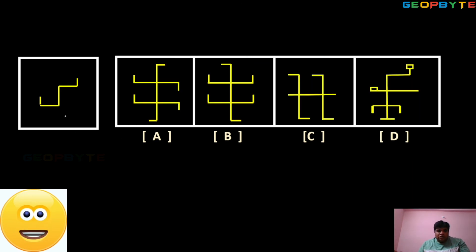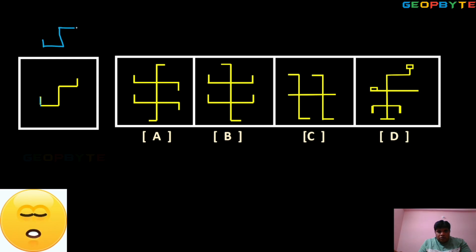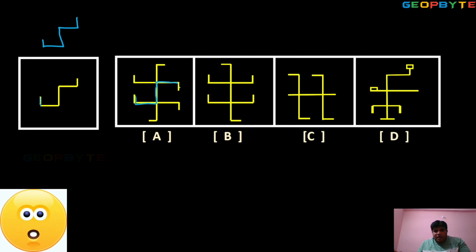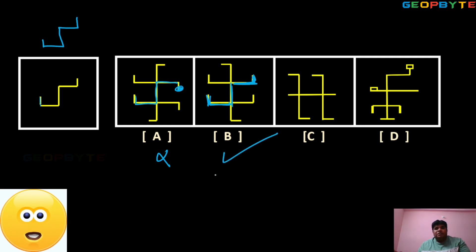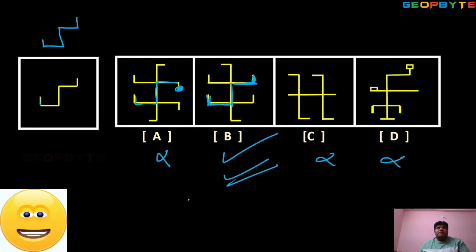Observe this shape. In option A, the last two strides are reverse, so option A wrong. Option B — this one and this one — exactly satisfied. Option B right. Option C wrong, option D also wrong. Option B is the satisfied answer.